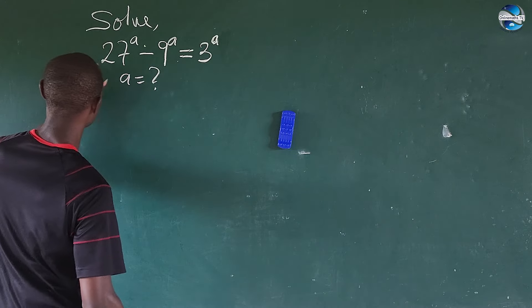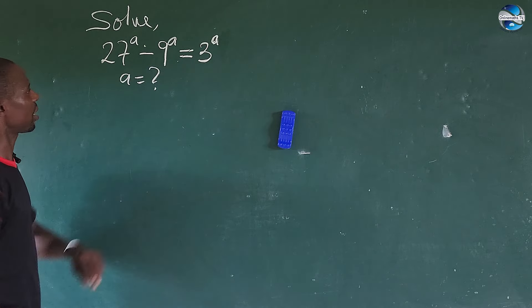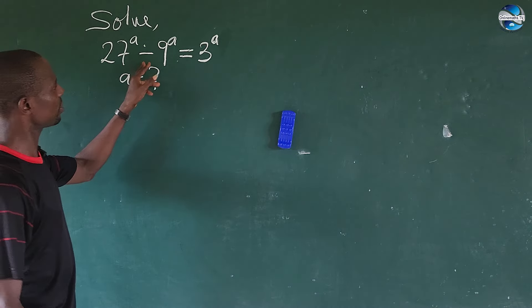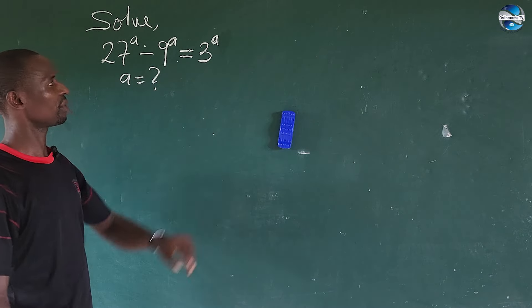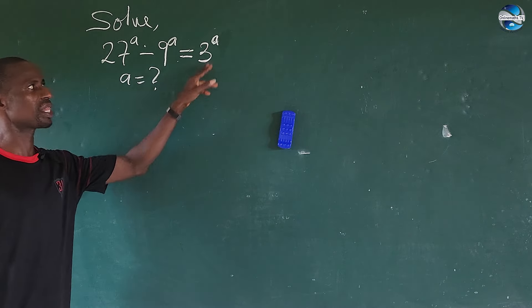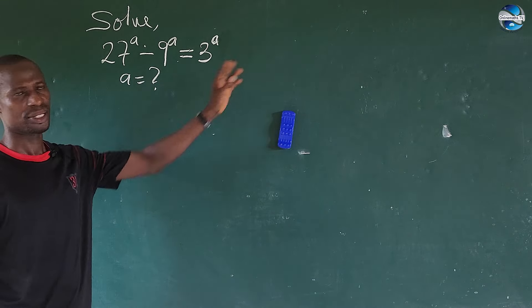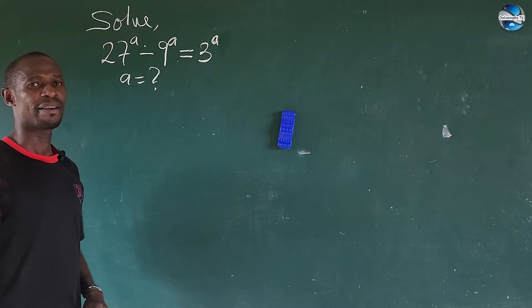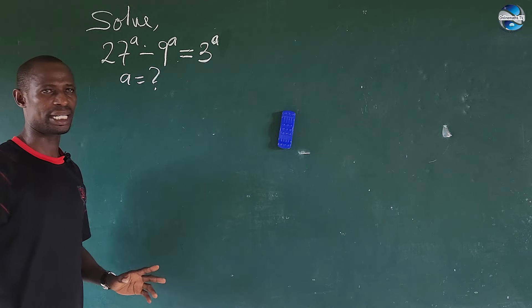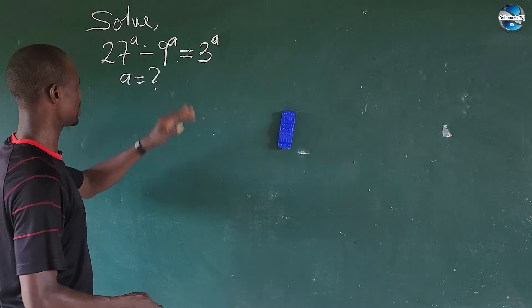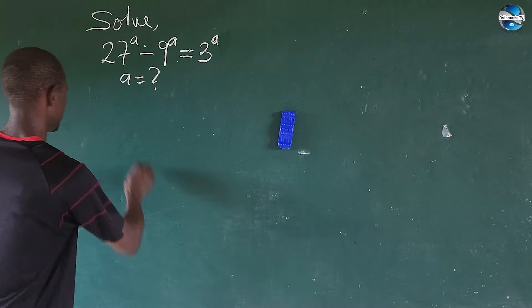The question reads: 27 to the power of a, minus 9 to the power of a, equals 3^a. So what is the value of a that will satisfy this expression?